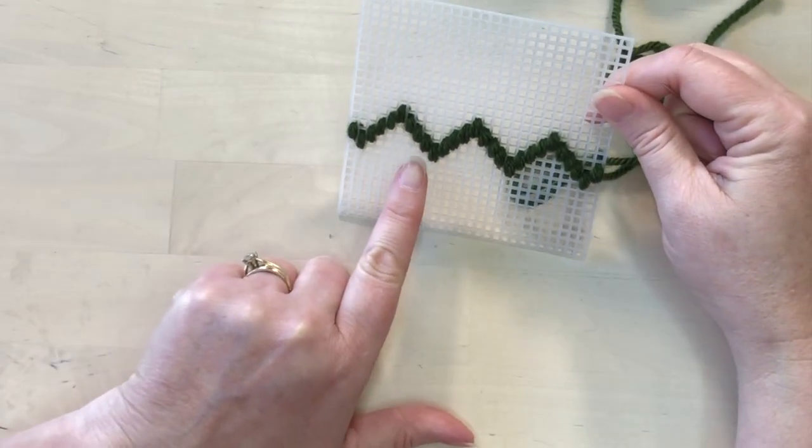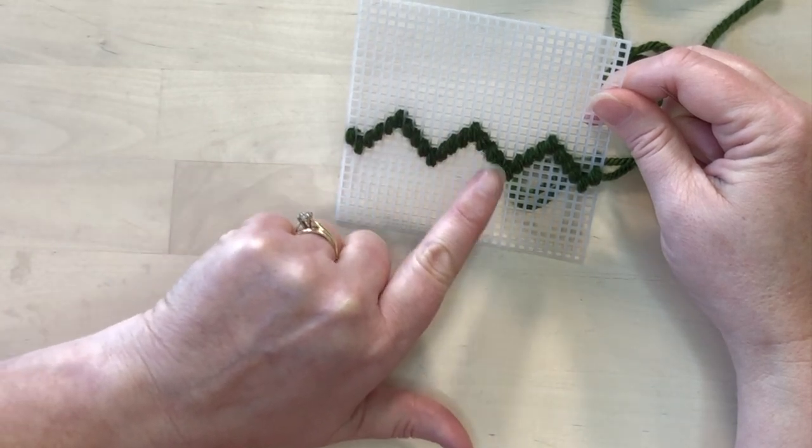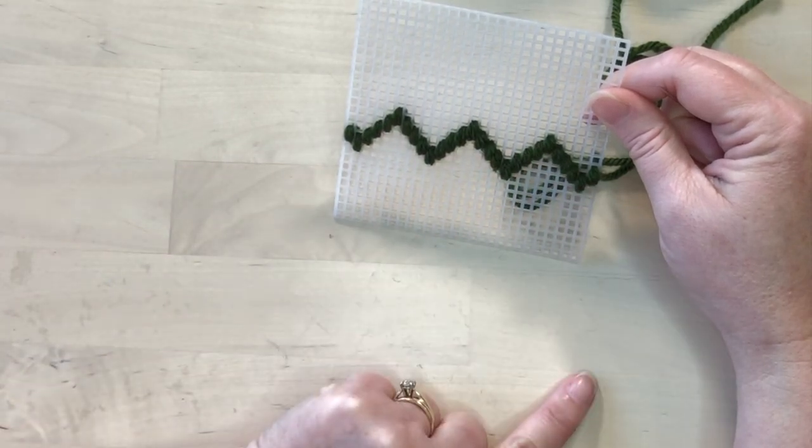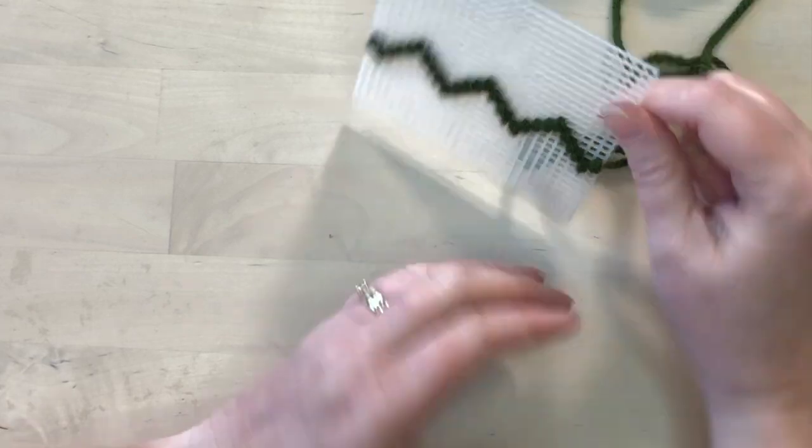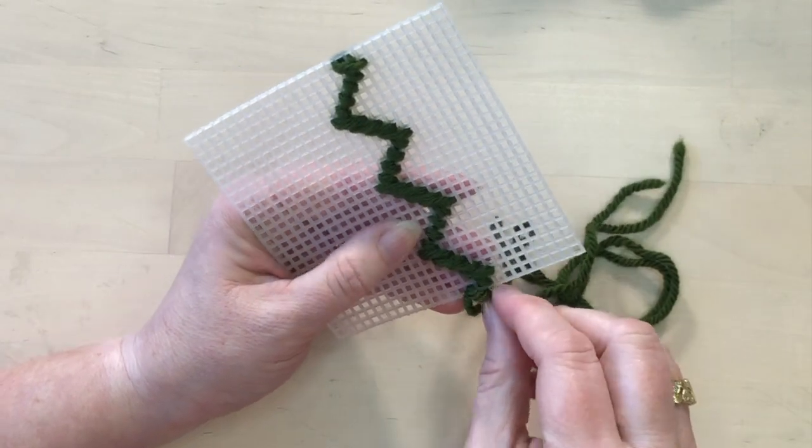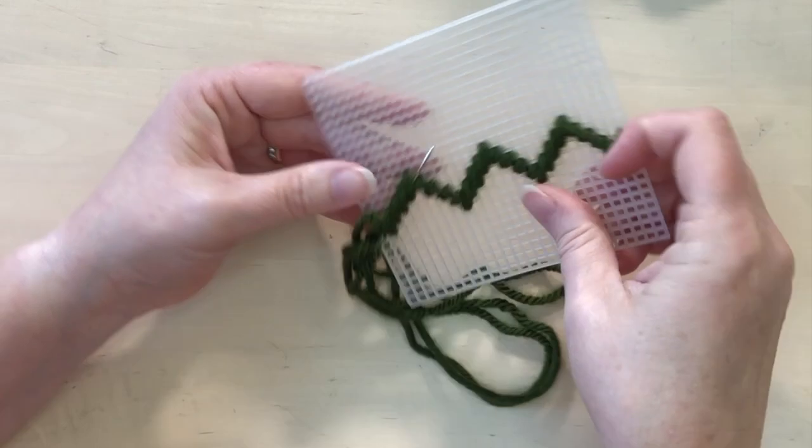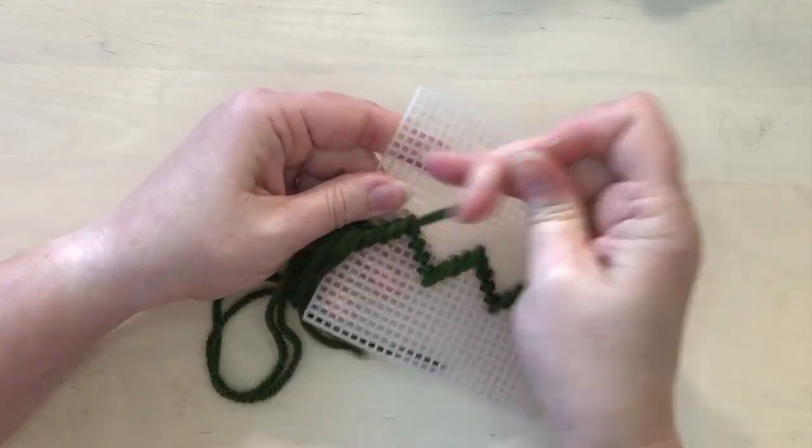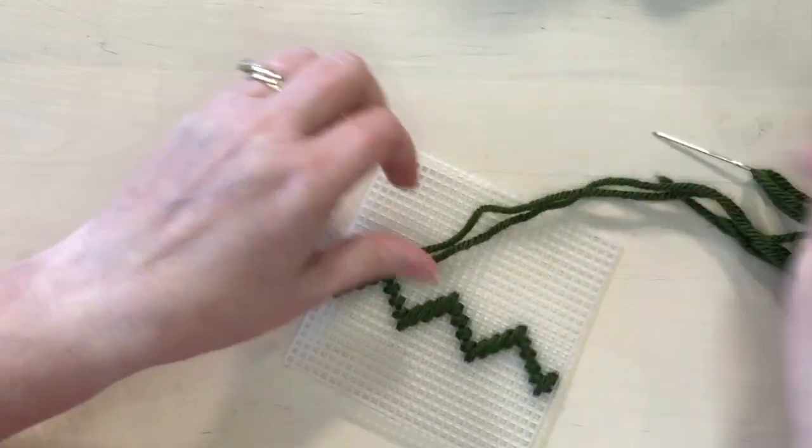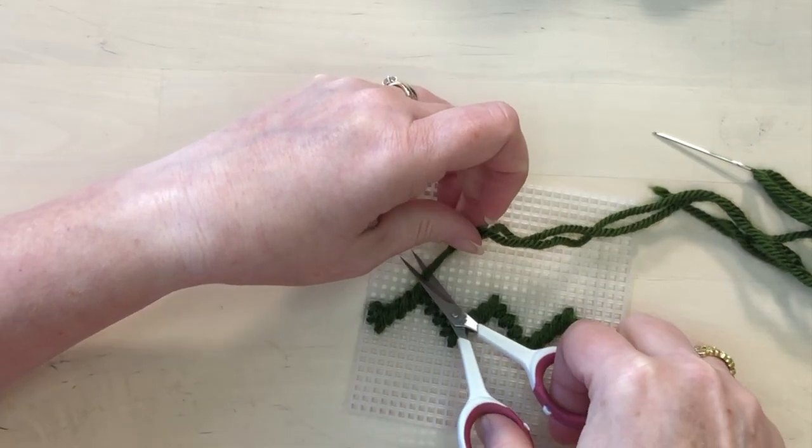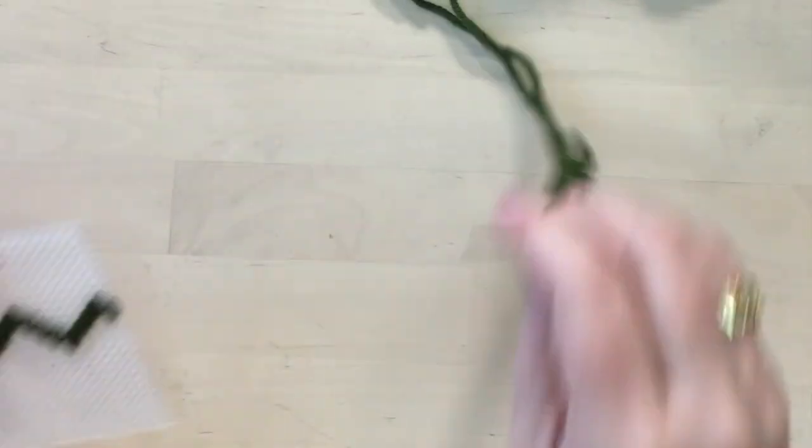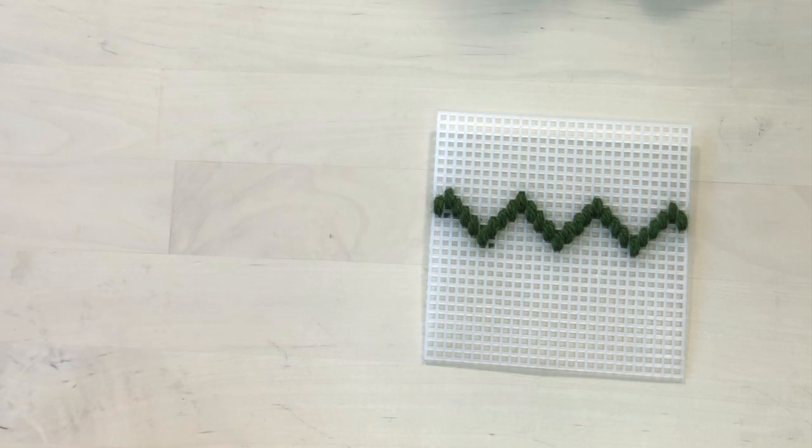Now I'm going to get to the end of this side. I'll just double check before I cut off my thread, but I can see it's a zigzag, five up and five down. It's even all the way across. And now I can just finish off the end of this thread. There it is.